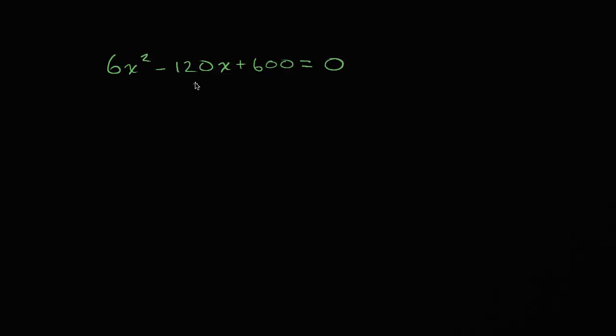So we have 6x² - 120x + 600 = 0. Like always, pause this video and see if you can solve for x, if you can find the x values that satisfy this equation.